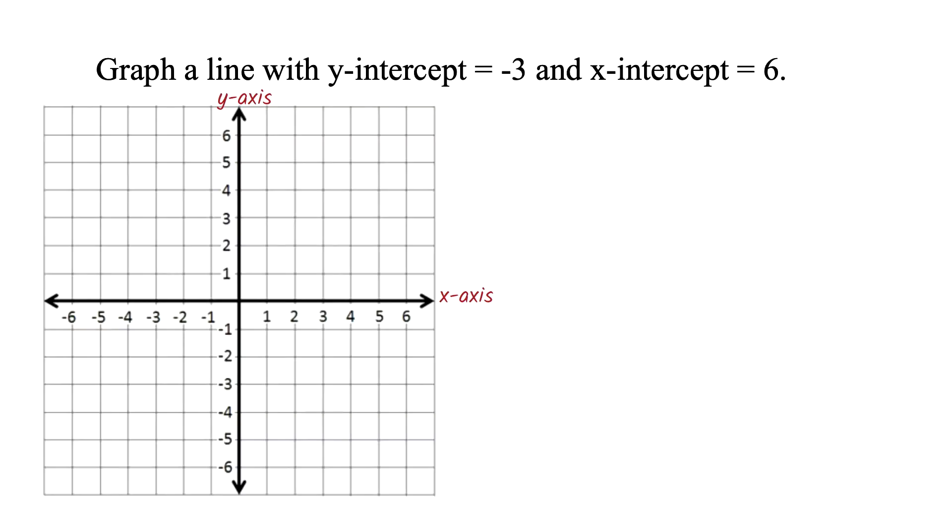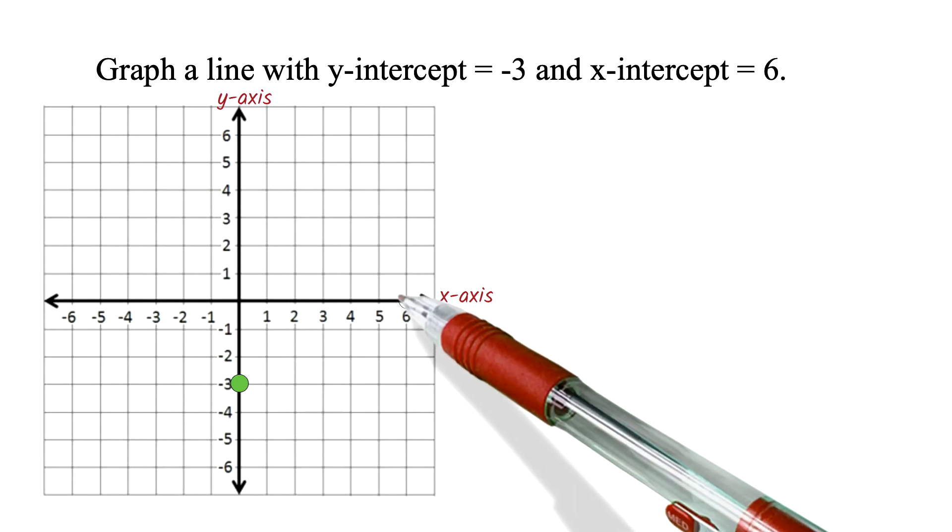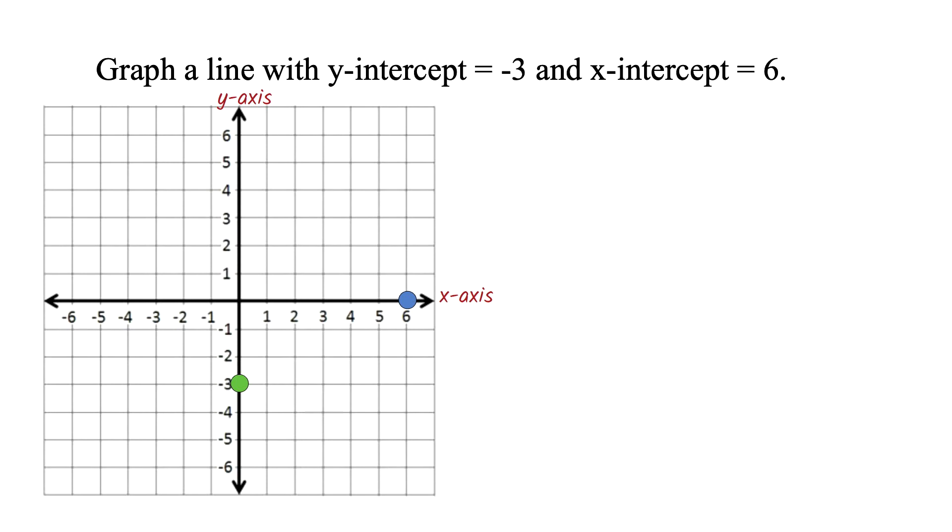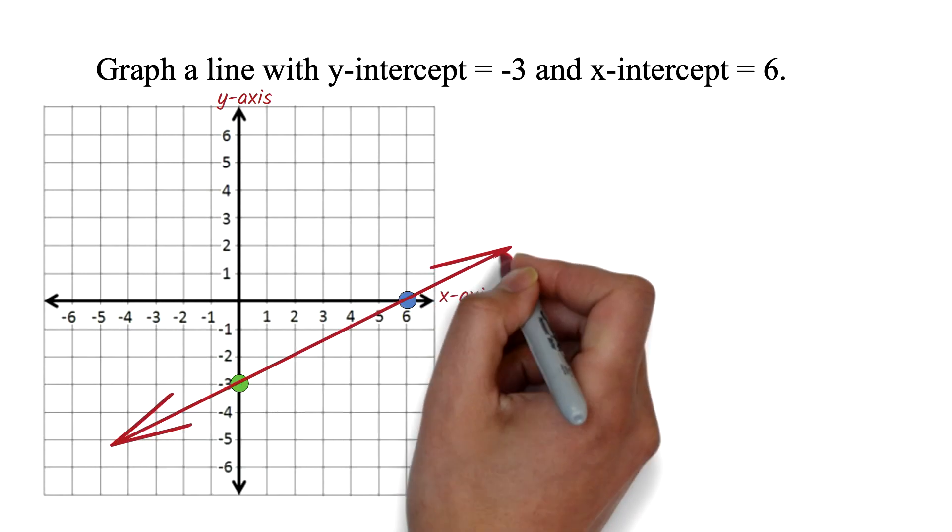Graph a line with Y-intercept negative 3, and X-intercept 6. We know the Y-intercept is a point on the Y-axis. This value is negative 3. We locate it and plot our point. The X-intercept is 6. We know that the X-intercept is a point on the X-axis. We locate our point 6 on the X-axis and plot the point. Finally, we draw a line through those two points and we are done.